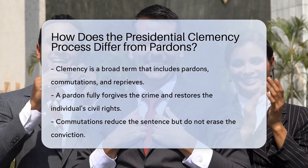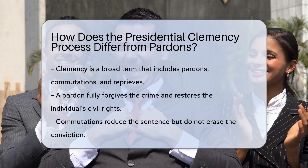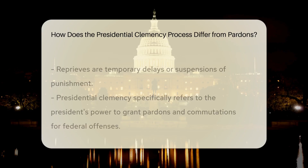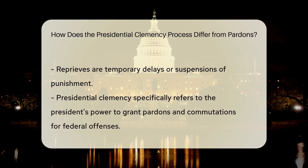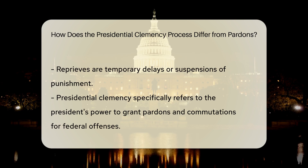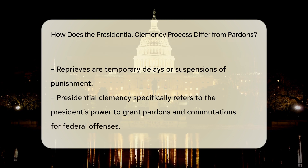A pardon fully forgives a convicted person's crime and restores their civil rights. On the other hand, commutations reduce a person's sentence but do not erase the conviction. Reprieves temporarily delay or suspend punishment.